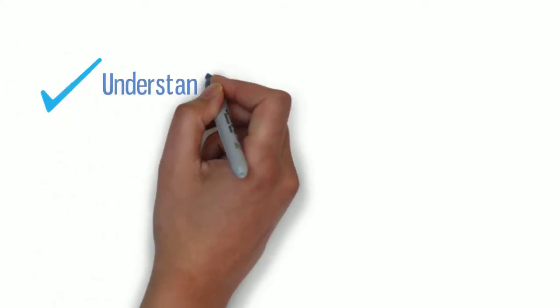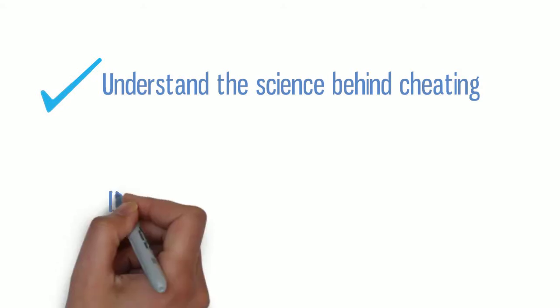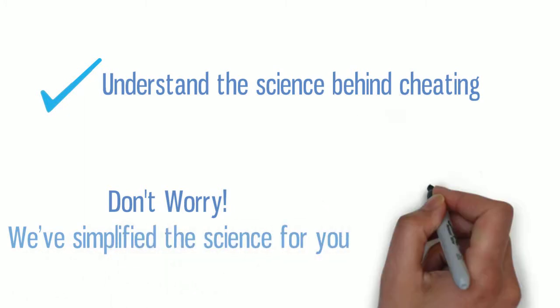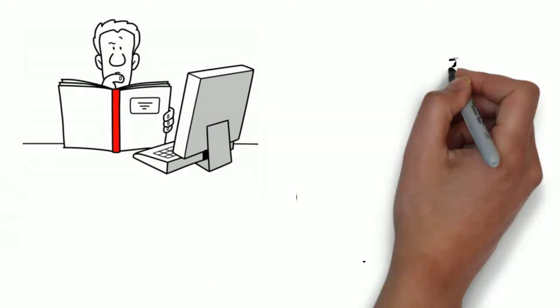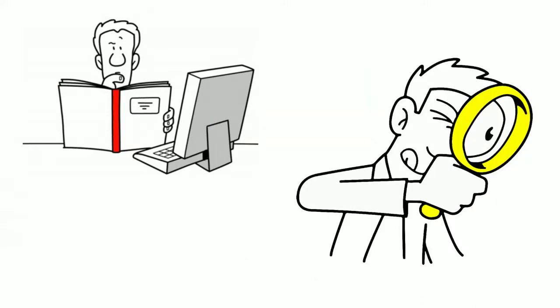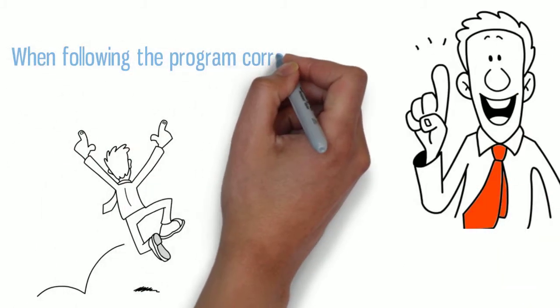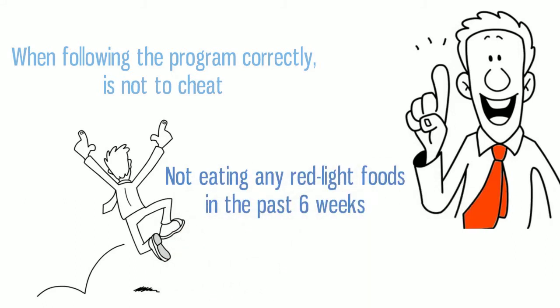Our goal for you is to understand the science behind cheating. We know that science may not be everyone's favorite subject, but don't worry, that's why we simplified the science for you. Knowing is one thing, but practicing is another. According to clinical research on our patients, only 20-25% on average followed the program correctly and had great results. The most important thing when following the program correctly is not to cheat, which means not eating any red light foods in the past six weeks.